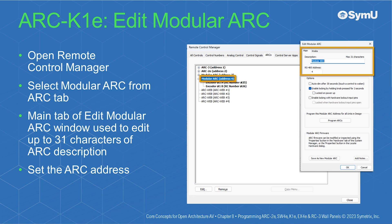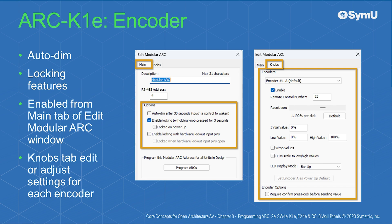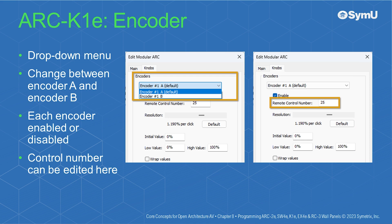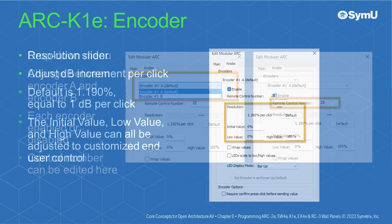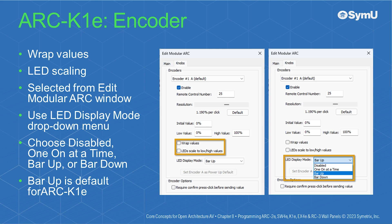Open Remote Control Manager and select Modular Arc from the Arc tab. The main tab of the Edit Modular Arc window edits up to 31 characters of the Arc description and sets the address in Composer. Use the dial switches on the back of the Arc K1E to set the physical address, ensuring it matches the address in Composer. Auto-dim and locking features are enabled from the main tab. The Knobs tab is used to edit or adjust settings for each encoder; use the drop-down menu to switch between Encoder A and Encoder B. Use the resolution slider to adjust the dB increment per click; the default is 1.190%, equal to 1 dB per click. The initial value, low value, and high value can all be adjusted. Use the LED Display Mode drop-down to choose between disabled, one on at a time, bar up, and bar down modes; bar up is the default for the Arc K1E.